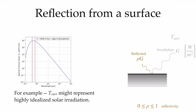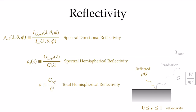Once that irradiation is incident upon a surface, a number of different things can happen to it. The first is some fraction of it can be reflected from that surface. Reflectivity is a surface property that tells us the fraction of that incident irradiation that is reflected by that surface. We can look at a number of different properties of decreasing complexity, and the first is the spectral directional reflectivity, which is a function of the wavelength and the direction — that is, the fraction of the irradiation at a given direction and wavelength that is reflected relative to the total at that direction and wavelength.